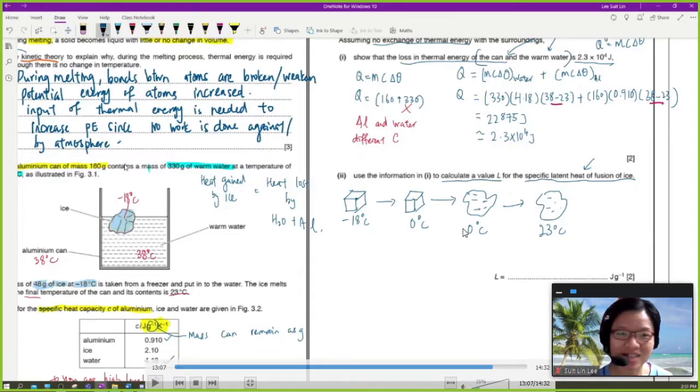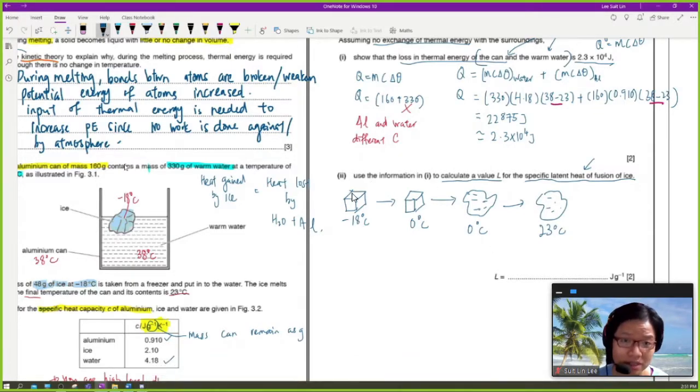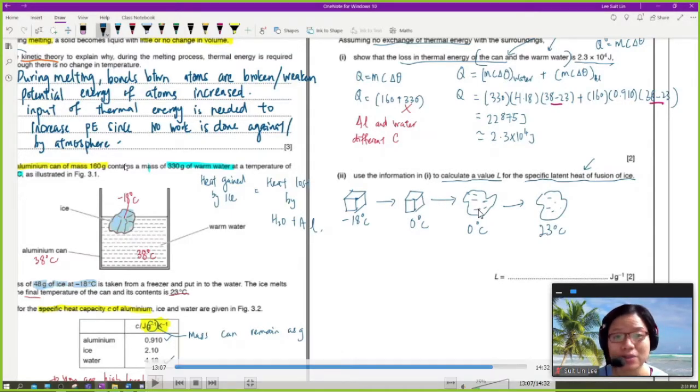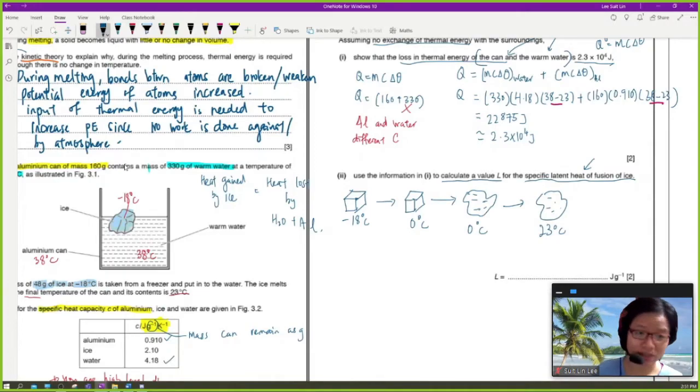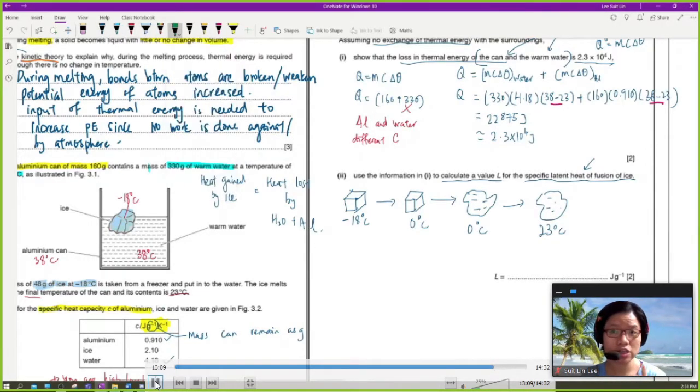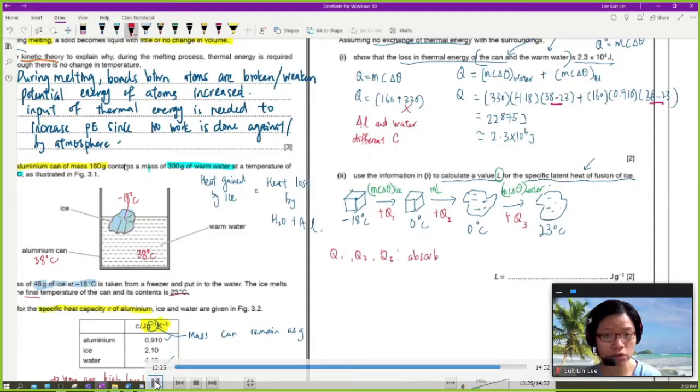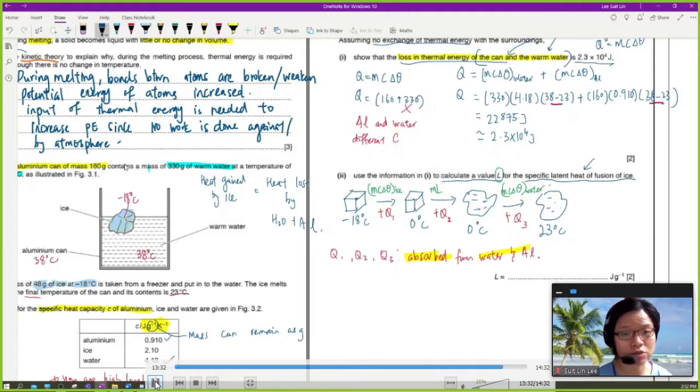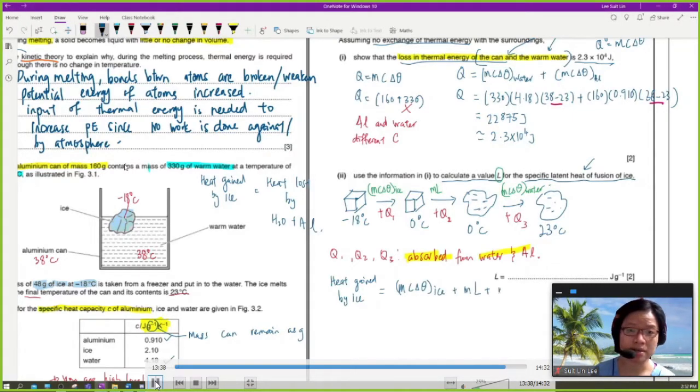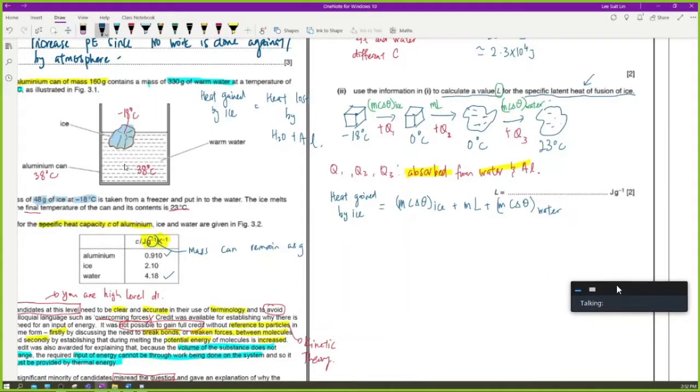You cannot. So please remember that the ice, negative 18 degrees Celsius, we need to convert to zero degrees Celsius ice. And zero degrees Celsius water, we need to convert to 23 degrees Celsius water. So whenever there is a change in temperature without a state change, we use MC delta theta for ice, ML for vaporization, and MC delta theta for water. Bearing in mind that the specific heat capacity, C for ice and water, is not the same. So you actually add heats in three stages. So Q1 plus Q2 plus Q3, all this heat is absorbed from water and aluminium. We assume that it didn't absorb from surrounding, which is the assumption in the question. So we can say heat gain by ice is equal to MC delta theta by ice plus MC delta theta by water.